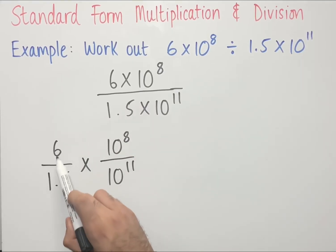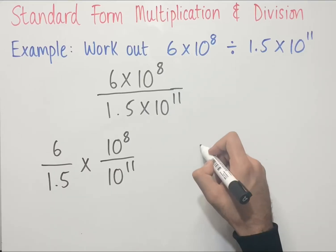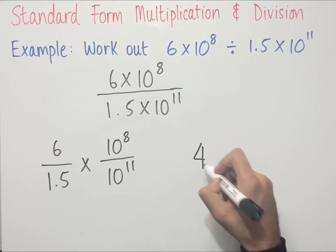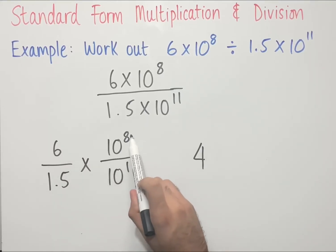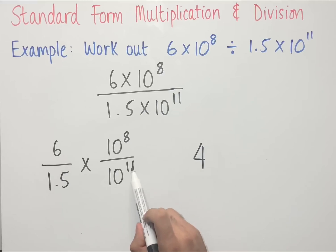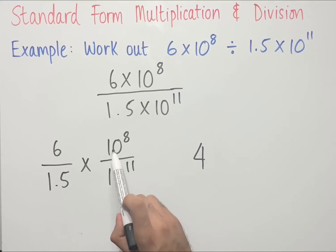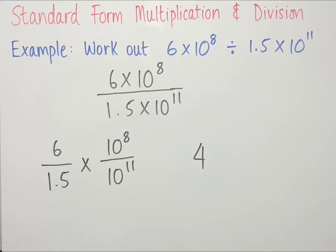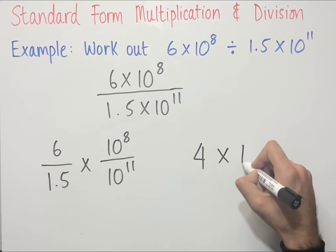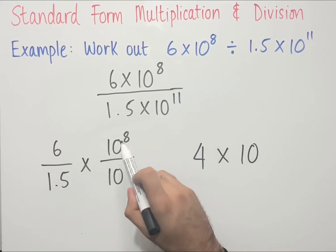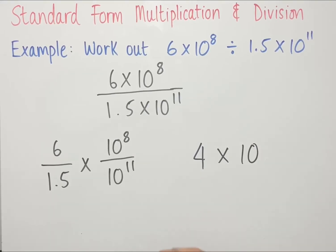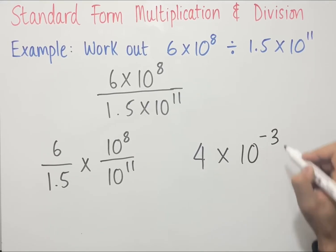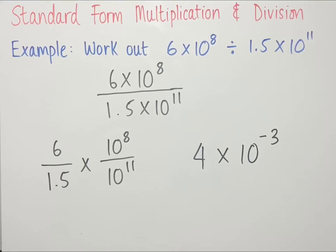So 6 divided by 1.5 is equal to 4. And 10 to the power of 8 divided by 10 to the power of 11 — when we have indices which have the same base and we're dividing, we take away the powers. So we get 10 to the power of 8 minus 11, which is minus 3. And this answer is in standard form.